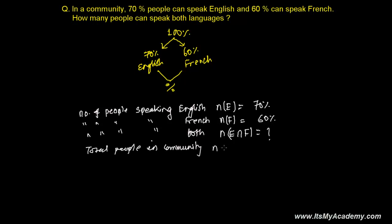And total number of people in community, N(E union F), because in that community, people can speak English or French or both. That is always 100%. So now, what do we know? That number of people who can speak English or French or both in that community is actually total number of people. That number of people speaking English or French, total number of people speaking English or French, N(E union F).